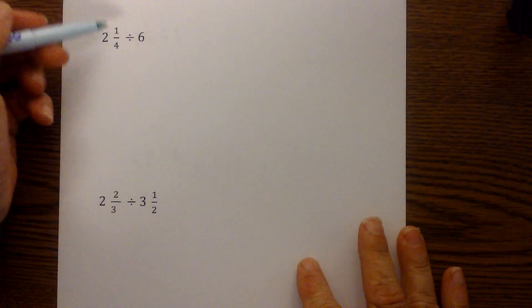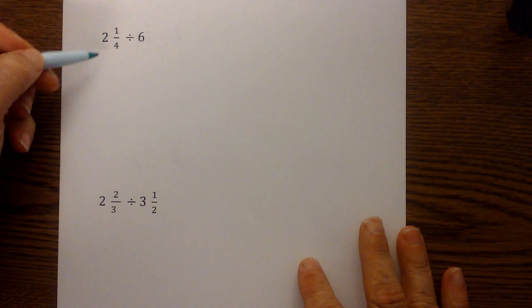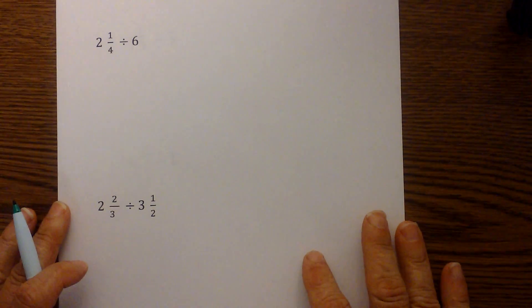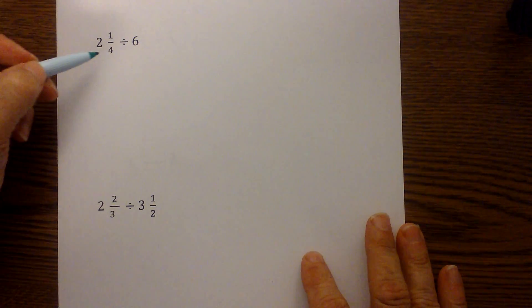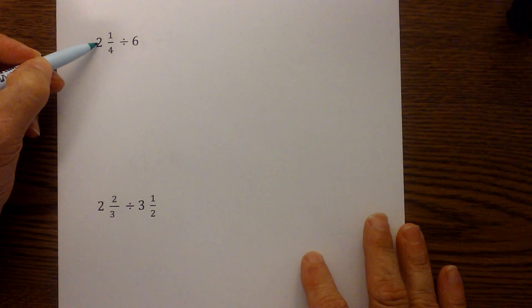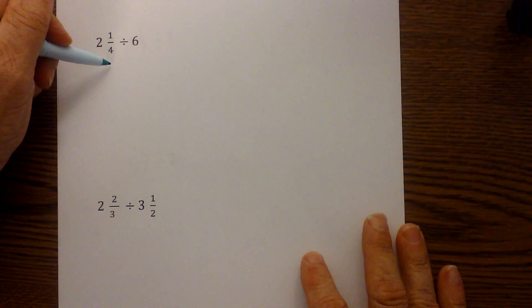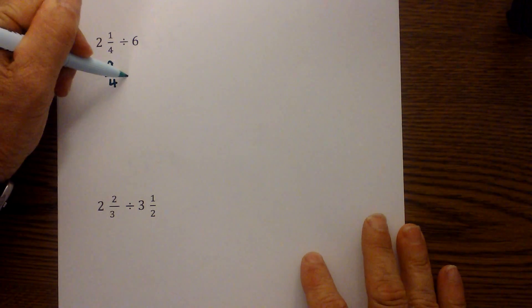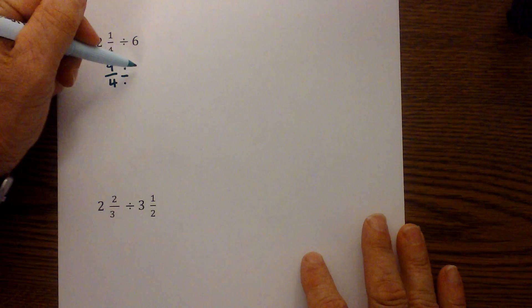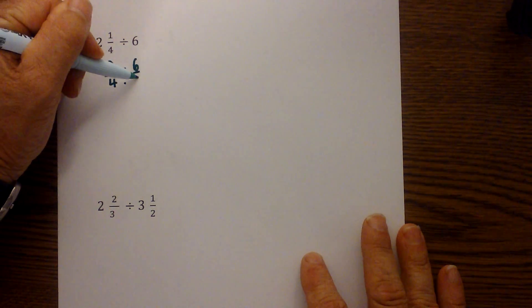First step is to convert both of these numbers into improper fractions. So, I'm going to go 4 times 2 which is 8 plus 1 which is 9 over 4. The way you can convert a whole number into an improper fraction is just place it over 1.